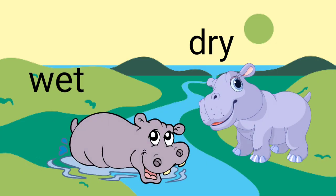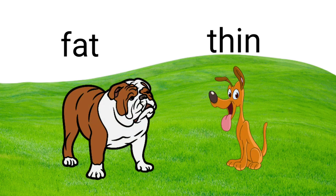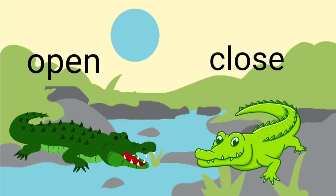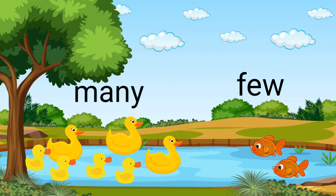Wet hippo. Dry hippo. Young camel. Old camel. Fat dog, thin dog. Open-mouth crocodile, close-mouth crocodile. Full fence of sheep, empty fence. Many ducks, few fish.